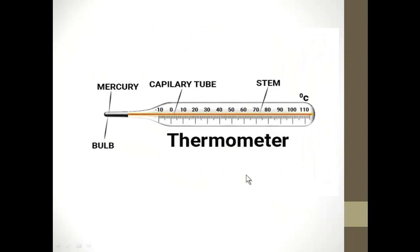A thermometer is used for measuring temperature. This is the bulb. Inside the bulb there is a liquid which is mercury, a capillary tube, and this is the stem. There are two types of liquids which are used in thermometers: one is mercury and the other is alcohol.